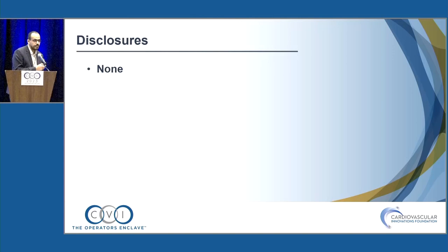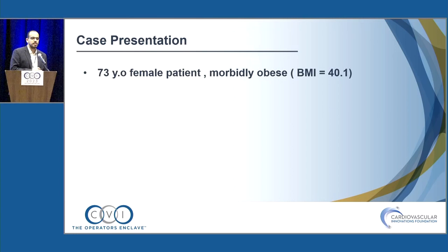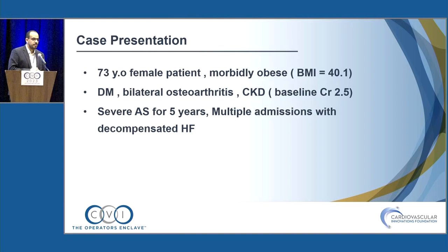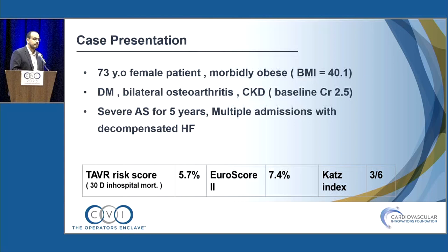I have nothing to disclose. My case today is about a 73-year-old female patient who is morbidly obese, diabetic with bilateral osteoarthritis, chronic kidney disease — her baseline creatinine was 2.5 — and known severe aortic stenosis for five years with multiple admissions with decompensated heart failure.